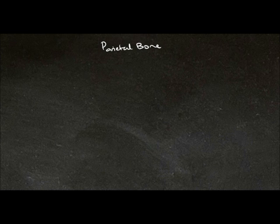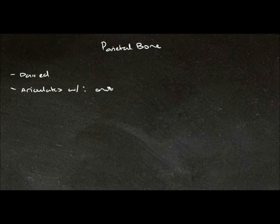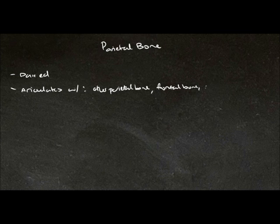We'll start off with the parietal bone. This is a paired bone, so there are two parietal bones to each skull. It articulates with several bones: first the other parietal, the frontal bone, the occipital bone, the temporal bone, and the sphenoid bone.